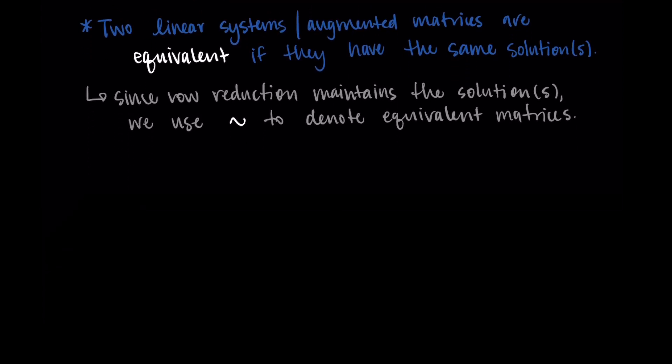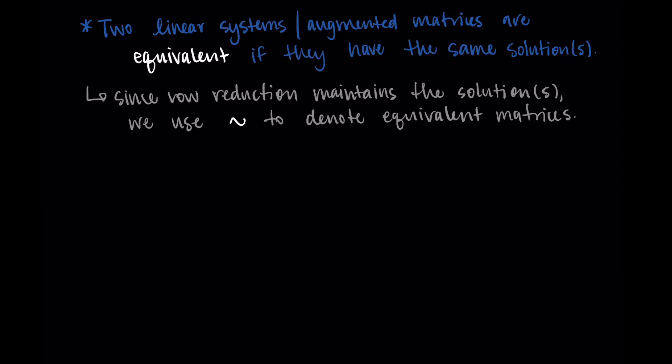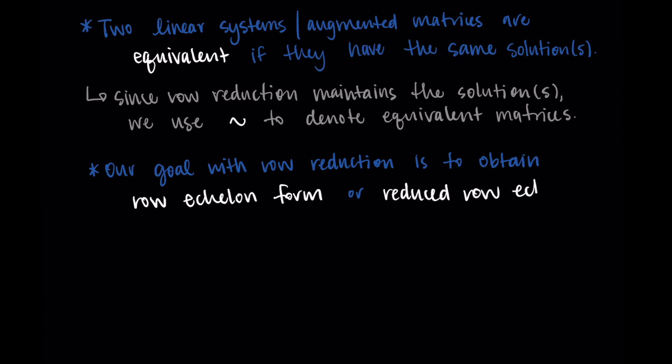So okay, we have our three operations we're allowed to do with row reduction. And our goal with the row reduction and what the purpose of row reduction is, is to obtain something called row echelon form, or reduced row echelon form. So we're reducing the rows from something complicated to something more simple. And this simpler version of what we're obtaining is called row echelon form, or reduced row echelon form.